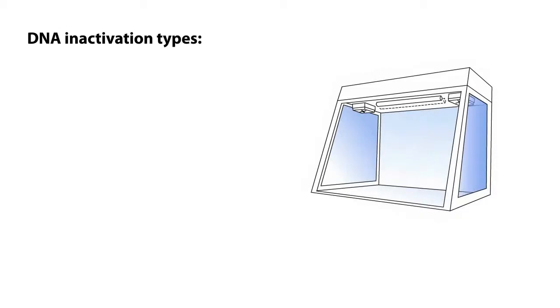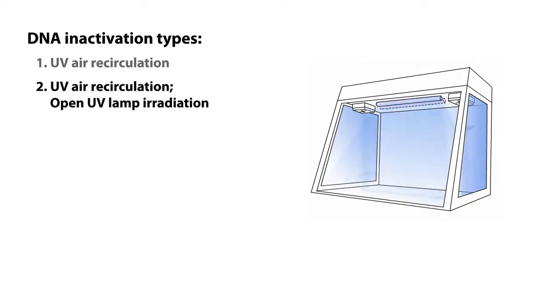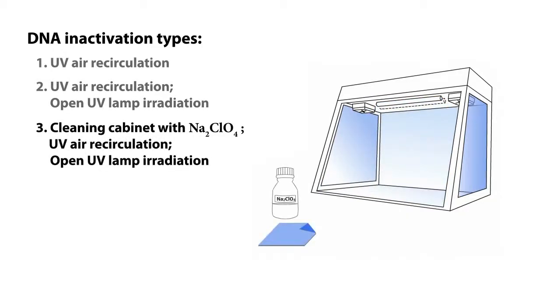The experiment goals are to check the efficiency of following DNA inactivation types: UV air recirculation, UV air recirculation combined with open UV lamp irradiation, washing cabinet surfaces with sodium chlorate followed by UV air recirculation and open UV lamp irradiation.